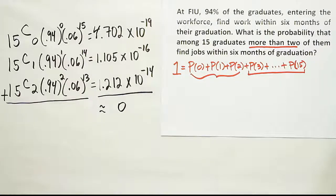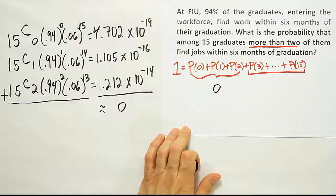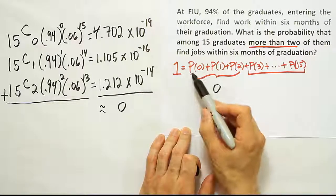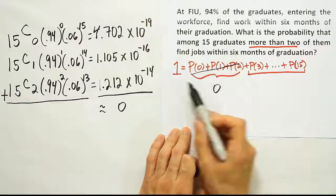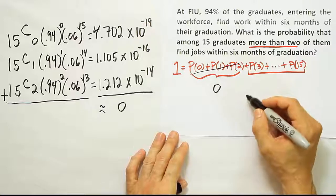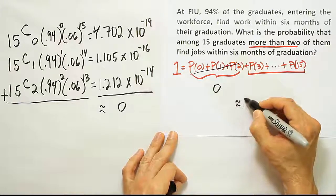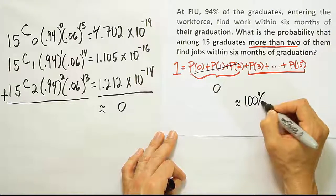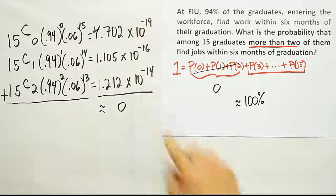So at this point, then, our result is actually quite nice. If this total here is zero, then essentially we can drop that off. And we get the answer 1 is equal to that. So the solution for the problem is basically 100%. You can say approximately 100% because technically there is some small probability, but the probability is almost astronomical.